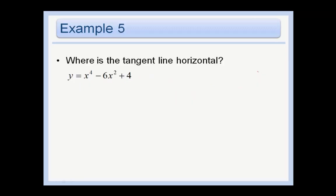Where is the tangent line horizontal if we have the function y equals x to the 4th minus 6x squared plus 4? Well what does a horizontal line look like? That is a line with a slope of 0. So horizontal line means that the slope is 0, meaning we want y prime to be 0. So we are trying to say where is y prime 0?